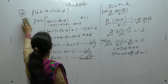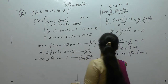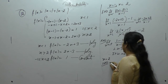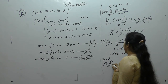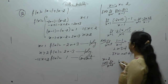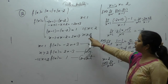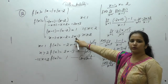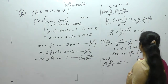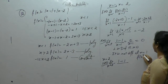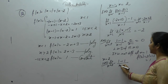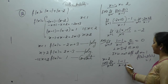Now we check differentiability at x = 2. Left hand derivative: limit x tends to 2 negative. For x < 2, f(x) = 1, and f(2) = 2×2 − 3 = 1. So (1 − 1) / (x − 2) = 0 upon x minus 2.